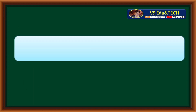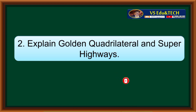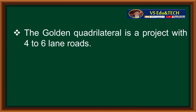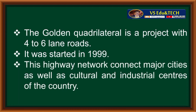Second question: explain golden quadrilateral and super highways. The golden quadrilateral is a project with four to six lane roads. It was started in 1999. This highway network connects major cities as well as cultural and industrial centers of the country.